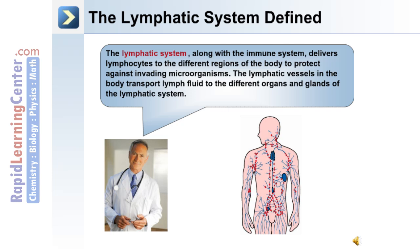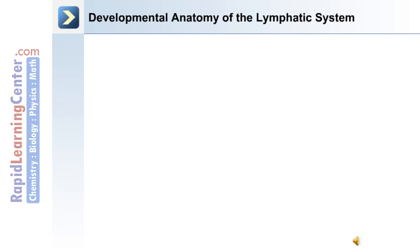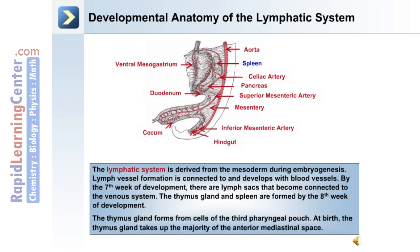The lymphatic vessels transport lymph fluid to the different organs and glands of the system. In terms of developmental anatomy, the lymphatic system is derived from the mesoderm during embryogenesis. Lymph vessel formation is connected to and develops with blood vessel formation. By the seventh week of development, lymph sacs become connected to the venous system. The thymus gland and spleen are formed by the eighth week. The thymus gland forms from cells of the third pharyngeal pouch, and at birth it occupies the majority of the anterior mediastinal space.